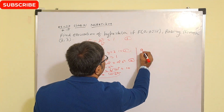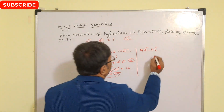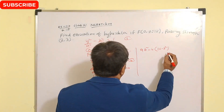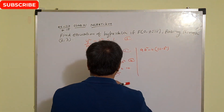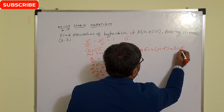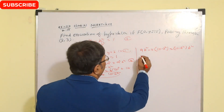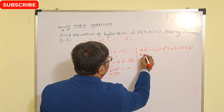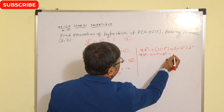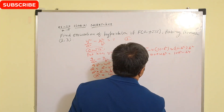Now putting this value of a² into equation number 2: 9b² − 4(10 − b²) = (10 − b²) · b². Expanding the left side: 9b² − 40 + 4b² = 10b² − b⁴.